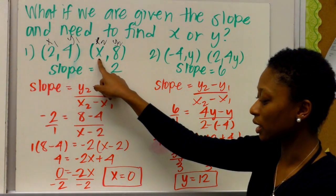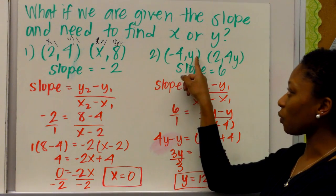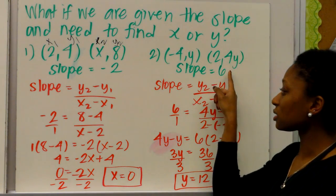So that means this point is 0, 8. Here, we have the point negative 4, y, and the point 2, 4. Slope is equal to 6,